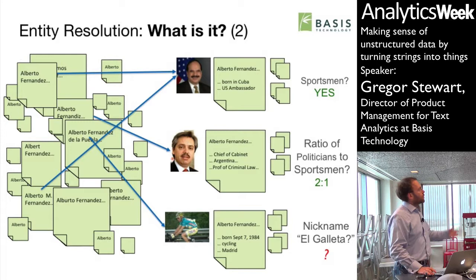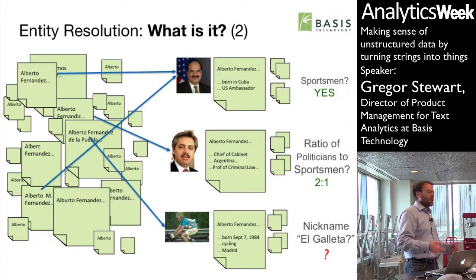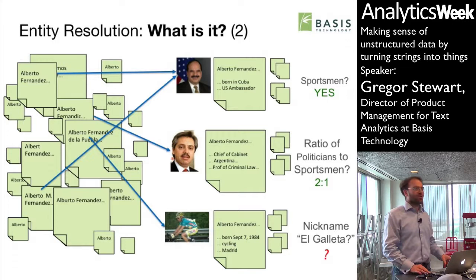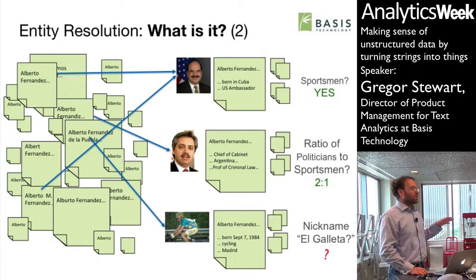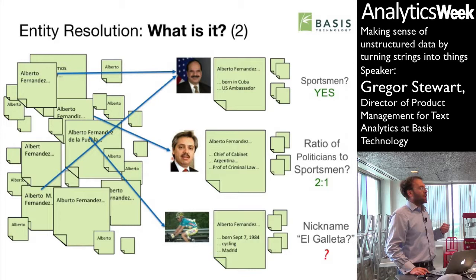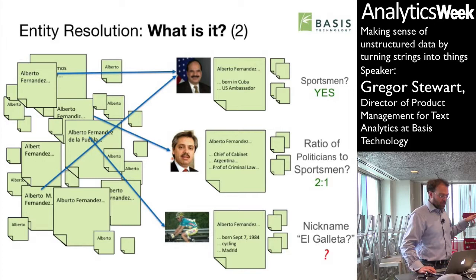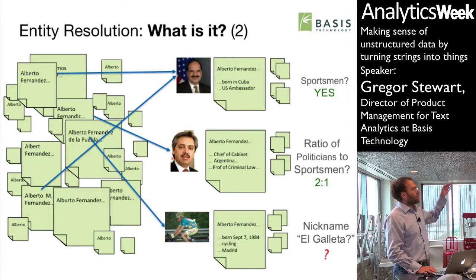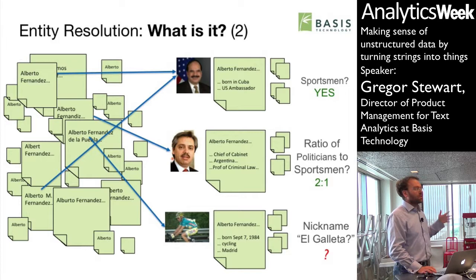It's doing two things: identifying known entities — in Wikipedia, for instance, I know there are two Bushes — and discovering new names that might not be in your knowledge sources. What this is missing is the crucial element: there are a lot of documents with many Albertos mentioned, and there are three Albertos they could be talking about — Alberto M. Fernandez, Alberto Fernandez, et cetera, with misspellings. Which of these three fellows is any given mention?